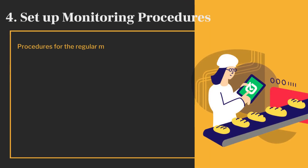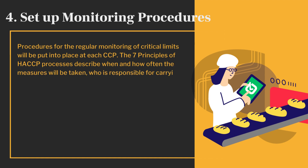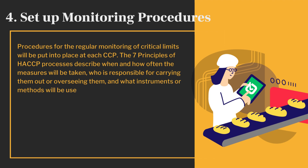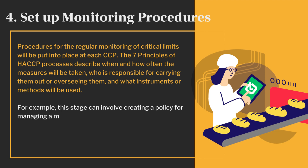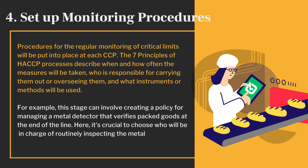Procedures for the regular monitoring of critical limits will be put into place at each CCP. The HACCP processes describe when and how often the measures will be taken, who is responsible for carrying them out or overseeing them, and what instruments or methods will be used. For example, this stage can involve creating a policy for managing a metal detector that verifies packed goods at the end of the line. It's crucial to choose who will be in charge of routinely inspecting the metal detector's operation and sensitivity.